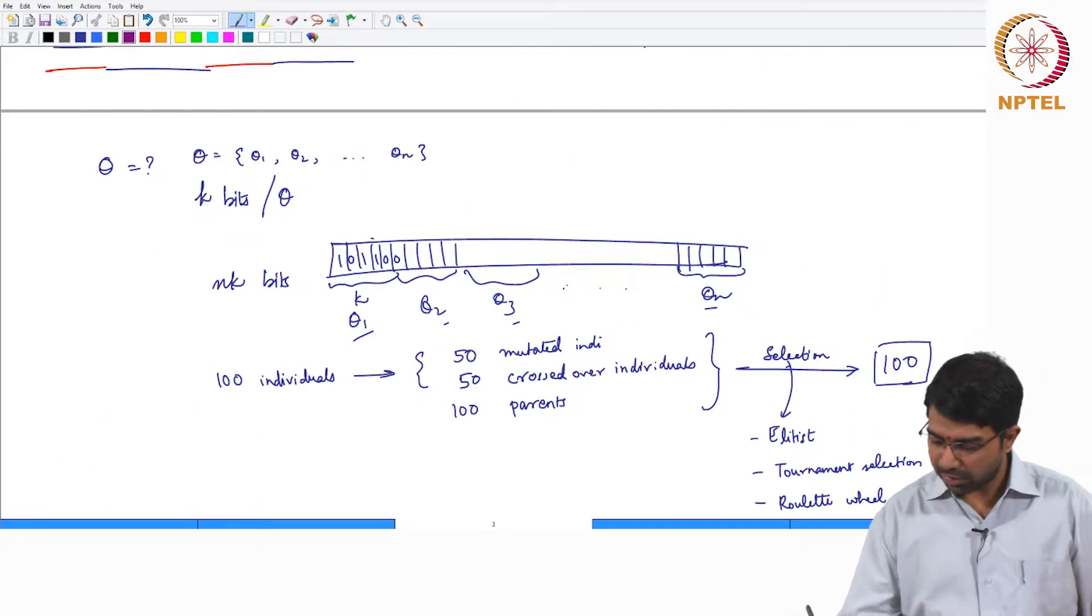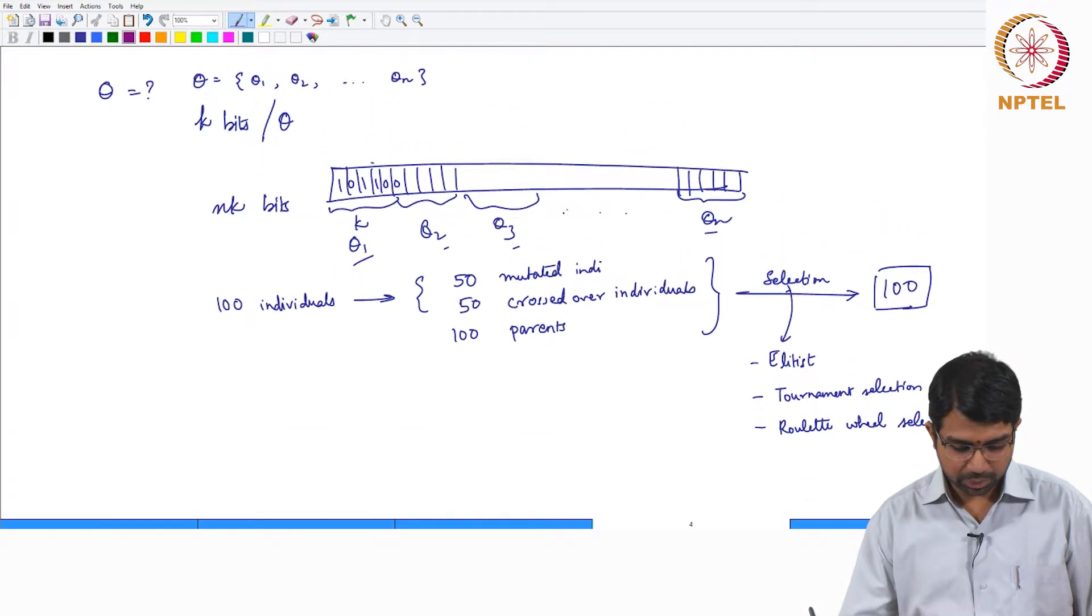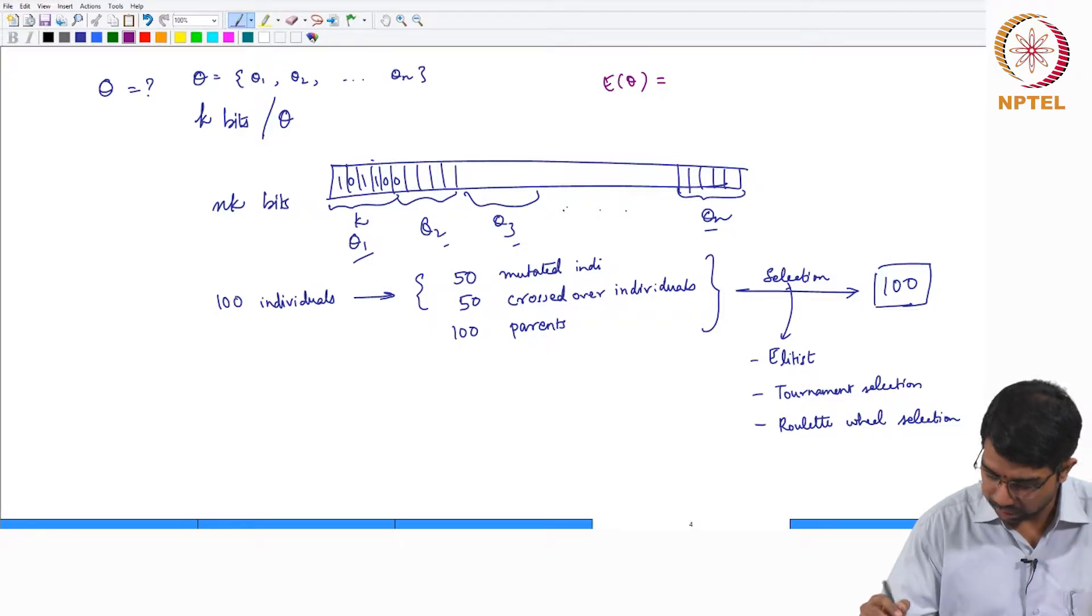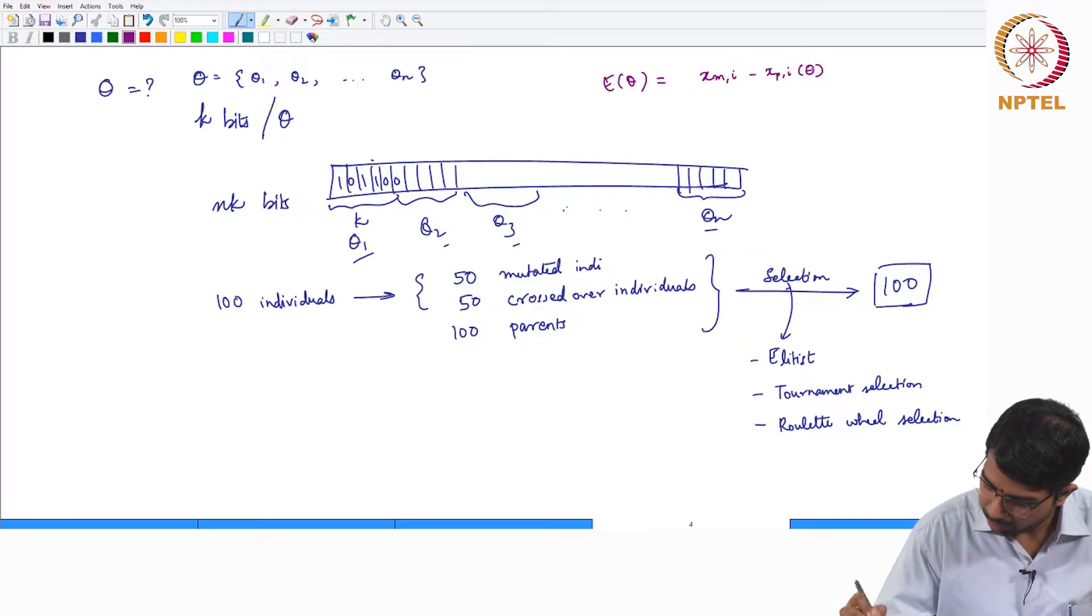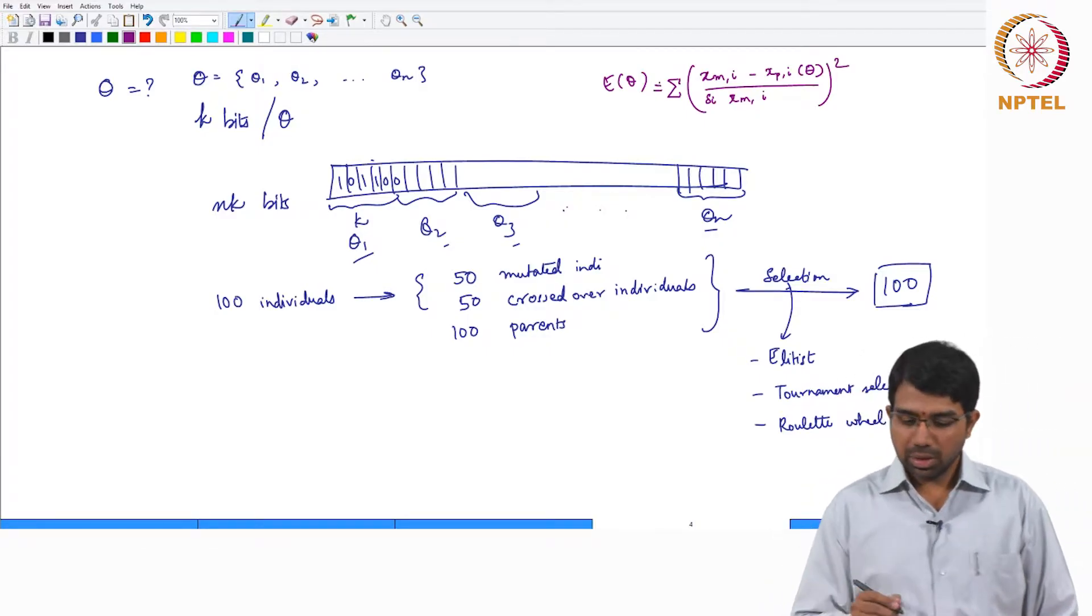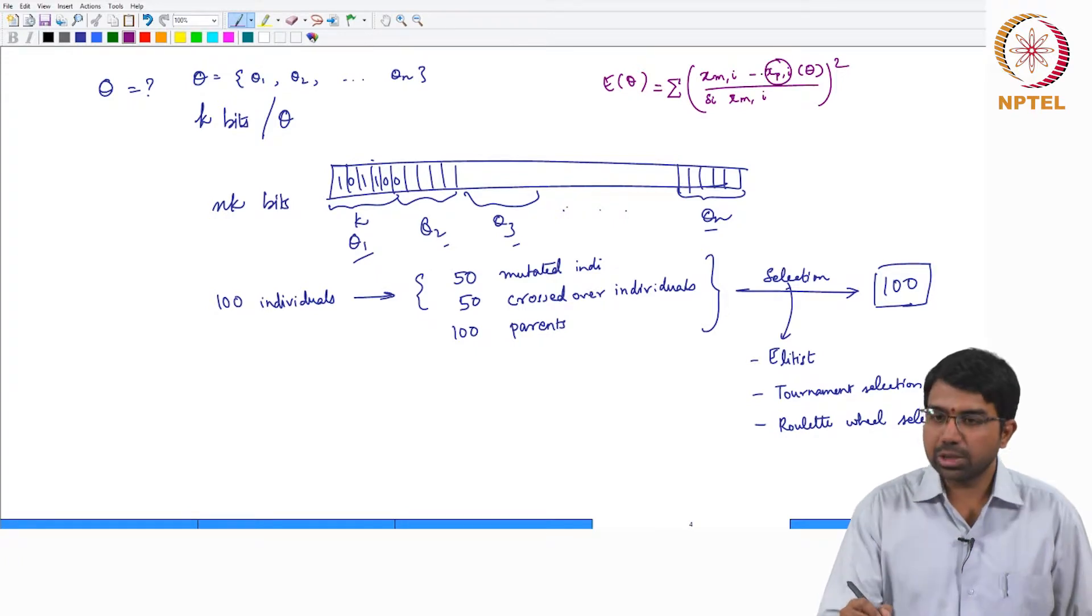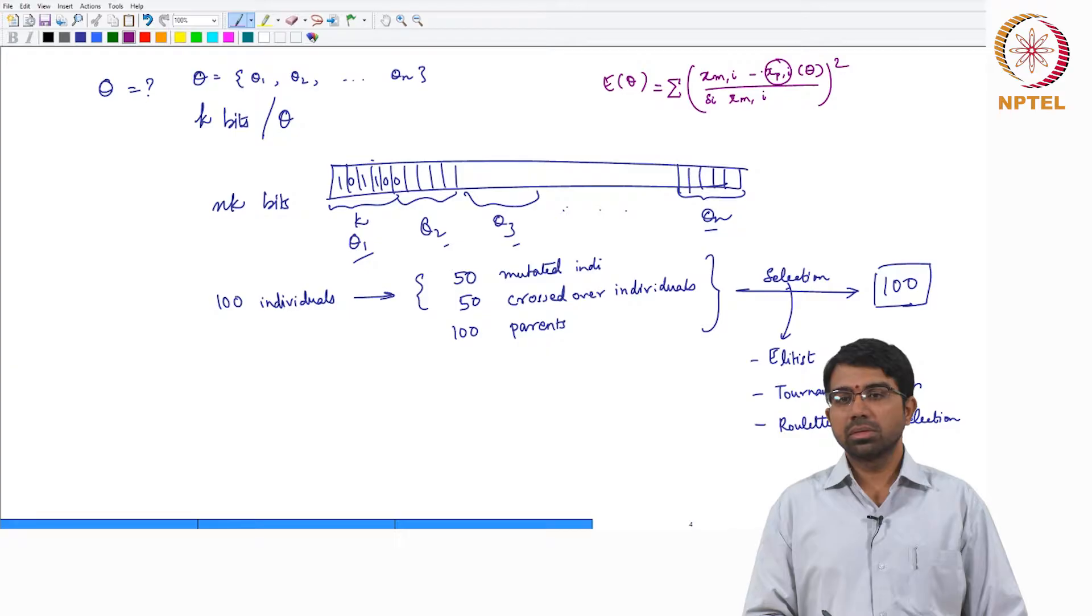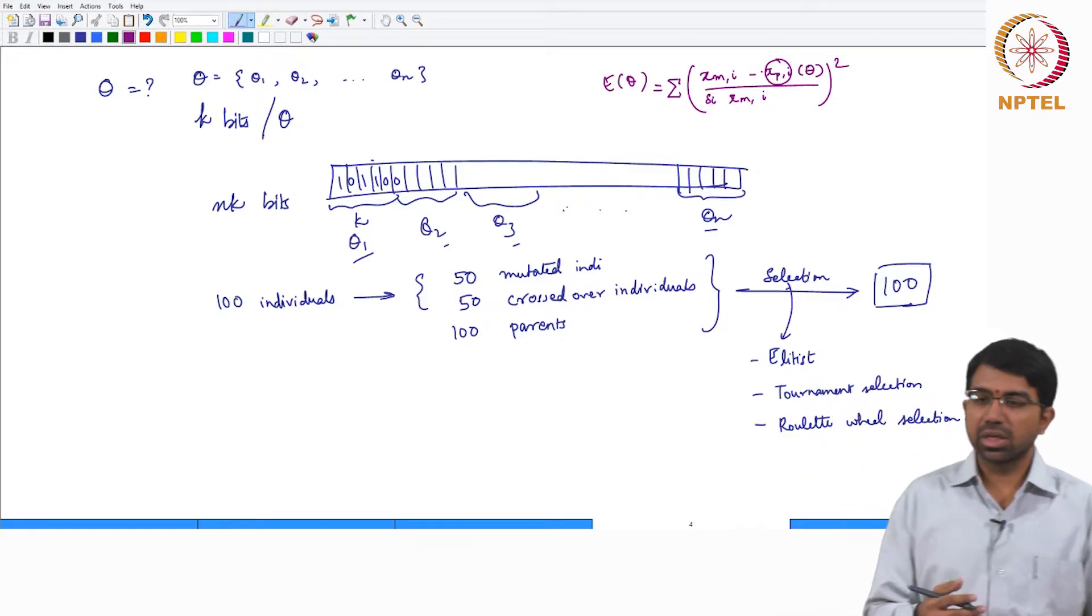What is the practical problem that we have on hand? We need to estimate parameters using a cost function E of theta, where each of these XPIs are actually computed by integration, solving a bunch of differential equations that capture your mass action kinetics or Michaelis-Menten kinetics and so on.